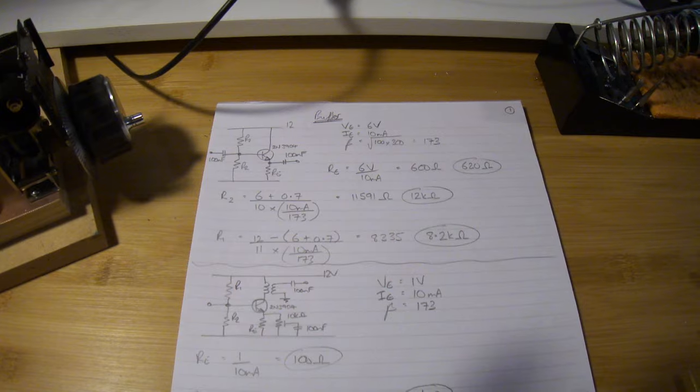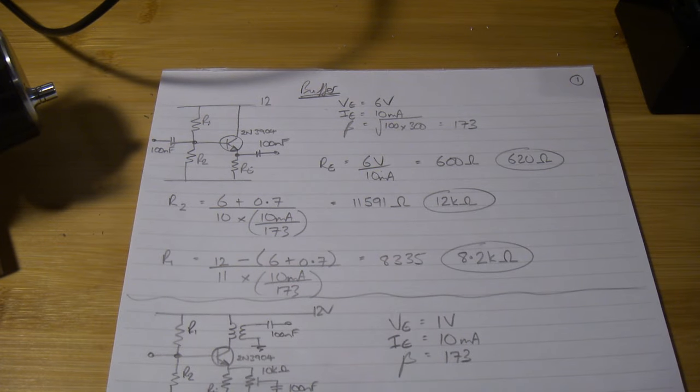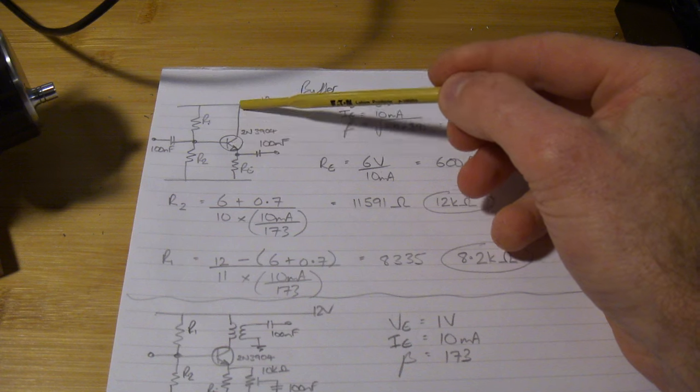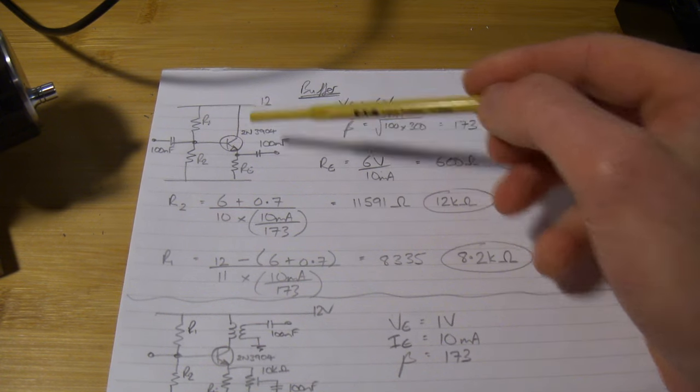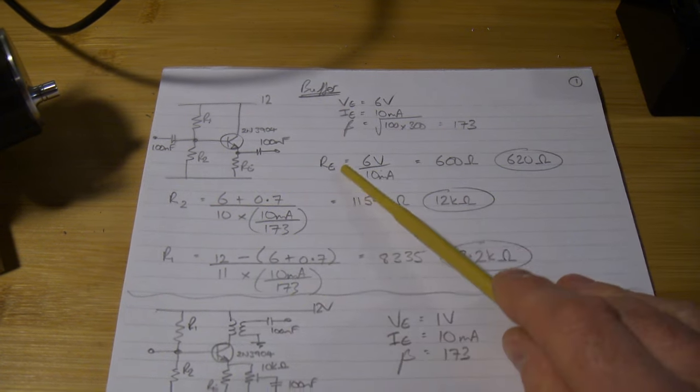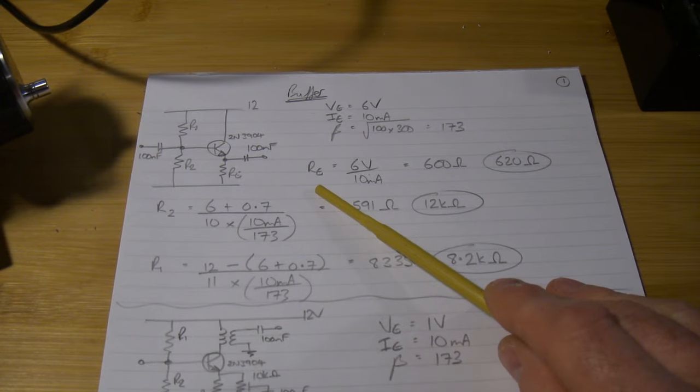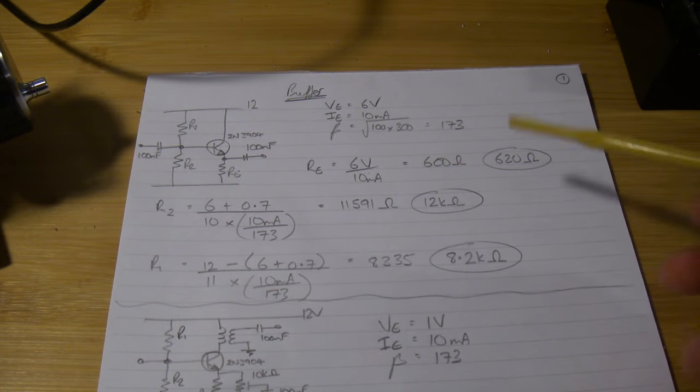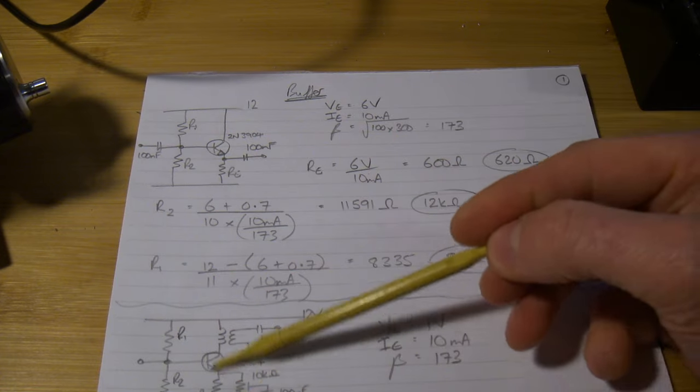OK, so in terms of what I've done here, sorry about moving the camera. Like I mentioned, there's two stages, there's the common collector stage that I spoke about in the last video and then down here is the common emitter. In both cases, right or wrong, what I elected to do is have 10 mA through each transistor.